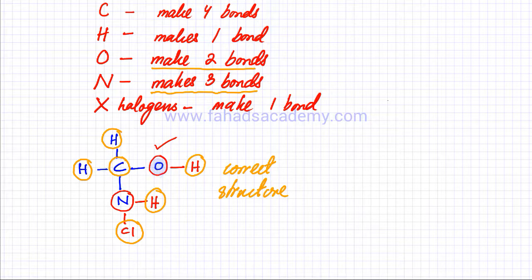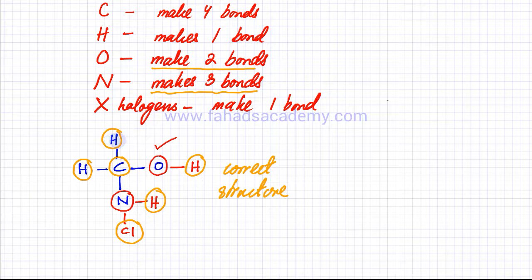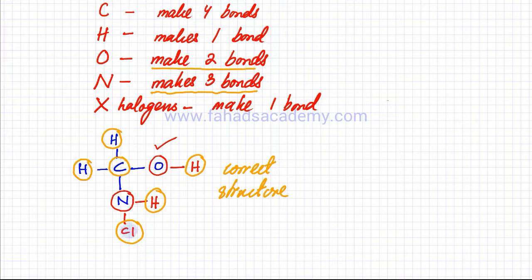Oxygen was supposed to make two bonds — it's making one and two. Nitrogen was supposed to make three bonds — it's making one here, one here, and one here. Hydrogen was supposed to make one bond — each hydrogen is making that one bond. Chlorine, which is a halogen, also makes one bond and it's doing that as well. You can rewind the video and watch it again — this is extremely important to get right.